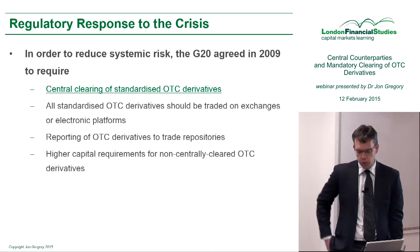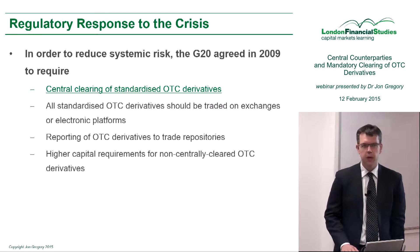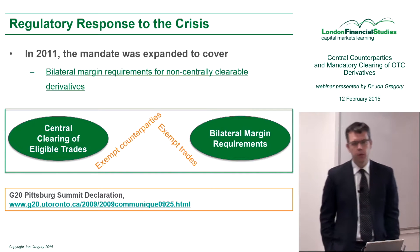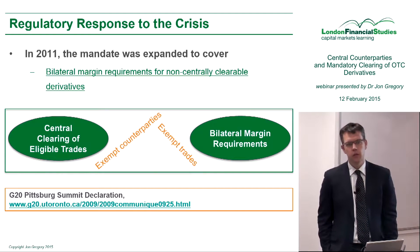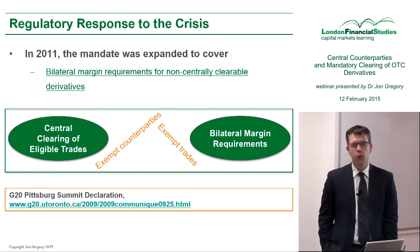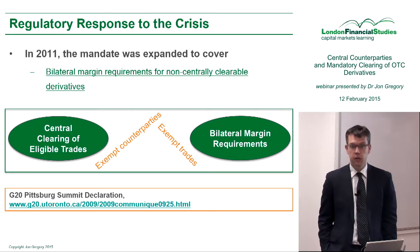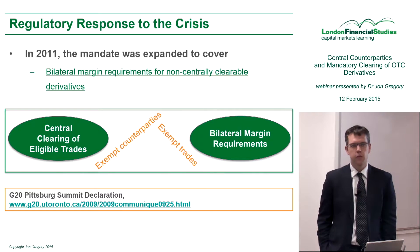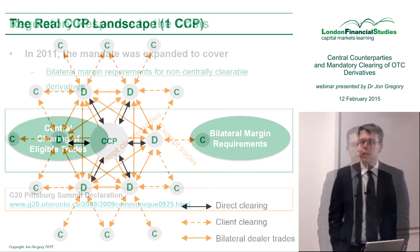One final piece of that jigsaw that came in later was the bilateral margin requirements. The idea was to say: suppose we have a trade that can't be centrally cleared — why don't we require that the counterparties put up margin, that's collateral, in the same way as if they were clearing it? In the bilateral market, historically over many years, banks and other participants have agreed to this.